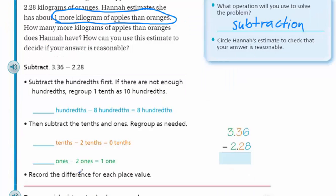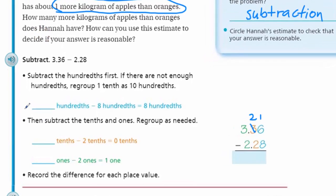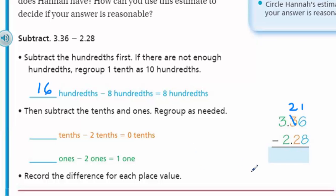Subtract the hundredths first. If there are not enough hundredths, regroup one tenth as ten hundredths. Since there's an 8 in the hundredths place in 2.28 and a 6 in 3.36 hundredths, I'm going to need to regroup. That means 16 hundredths minus 8 hundredths equals 8 hundredths. Then subtract the tenths and ones, regroup as necessary. Two tenths minus two tenths is zero, bring down the decimal point, and three ones minus two ones is one.